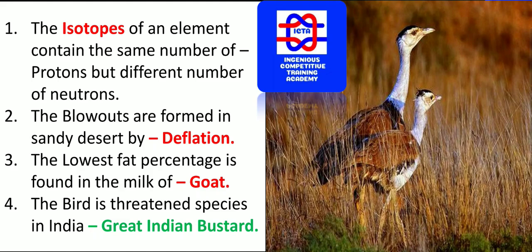Blowouts are formed in sandy deserts by the process known as deflation. Note: this is a geographical term, different from economic inflation and deflation. Next, the lowest fat percentage is found in the milk of the goat. Among goat, buffalo, and cow, the goat has the least fat content.